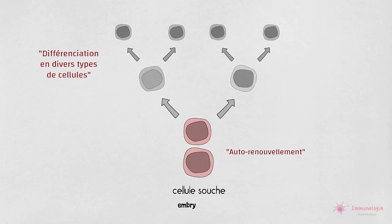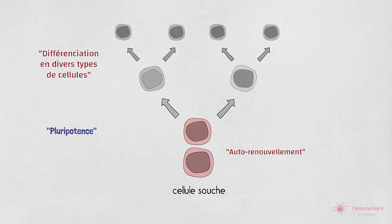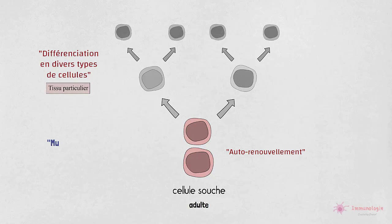Les cellules souches embryonnaires ont la capacité de générer presque tous les types de cellules spécialisées d'un organisme — elles sont pluripotentes. D'autre part, les cellules souches adultes ont la capacité de donner naissance aux divers types de cellules qui spécifient un tissu particulier — elles sont multipotentes.